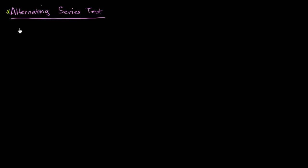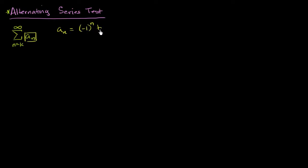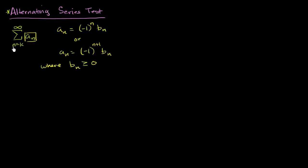Let's say that I have some infinite series from n equals k to infinity of a sub n, and let's say I can rewrite a sub n as negative one to the n times b sub n, or a sub n is equal to negative one to the n plus one times b sub n, where b sub n is greater than or equal to zero for all integer n's greater than or equal to k.